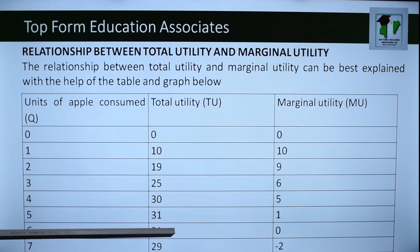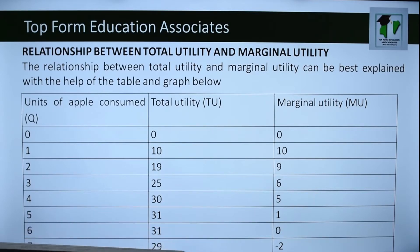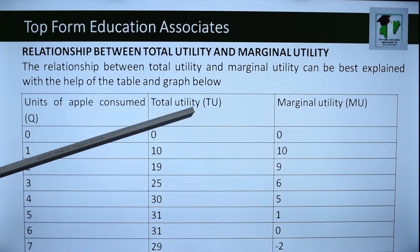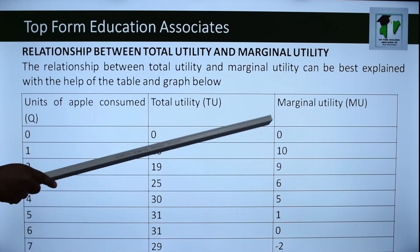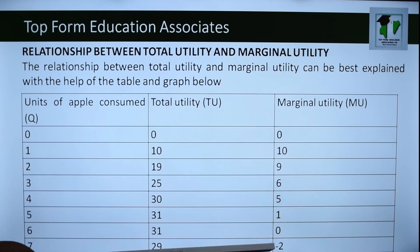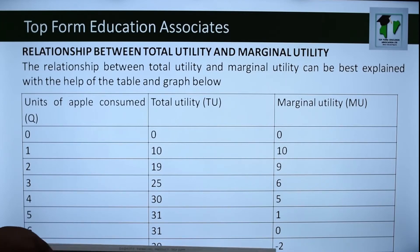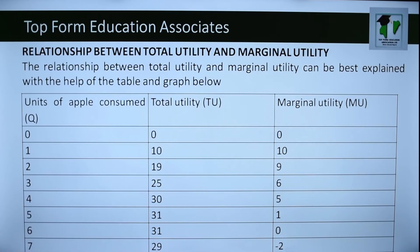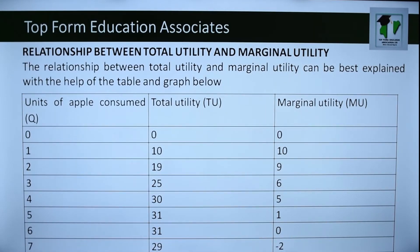After the maximum, total utility begins to decrease. Once total utility begins to decrease, marginal utility becomes negative — meaning instead of gaining satisfaction from what you are consuming, you are experiencing disutility. From this table you can present the relationship in a diagram.